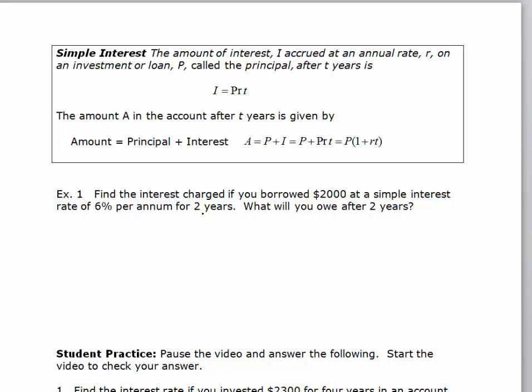Find the interest charged if you borrowed $2,000 at a simple interest rate of 6% per annum for 2 years. What will you owe after 2 years? So the first thing we need to do is find the interest. And we know the interest equals the principal times rate times time.